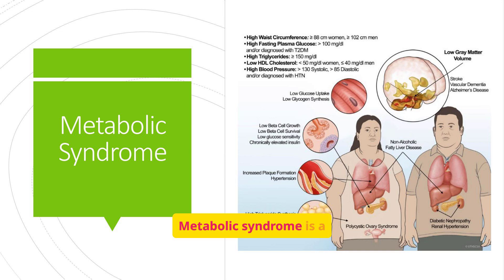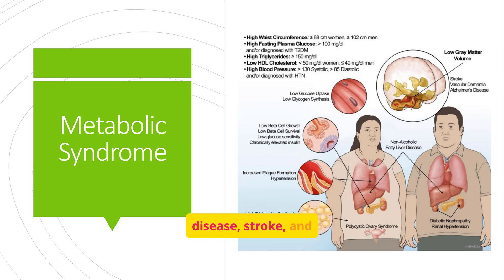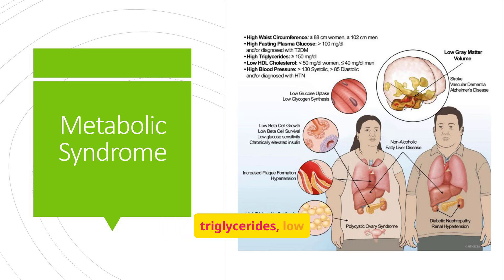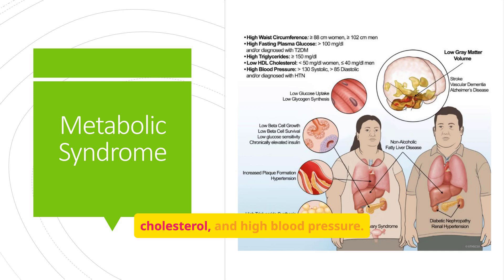Metabolic syndrome is a cluster of conditions that increase the risk of heart disease, stroke, and diabetes. These include high waist circumference, high fasting plasma glucose, high triglycerides, low HDL cholesterol, and high blood pressure.